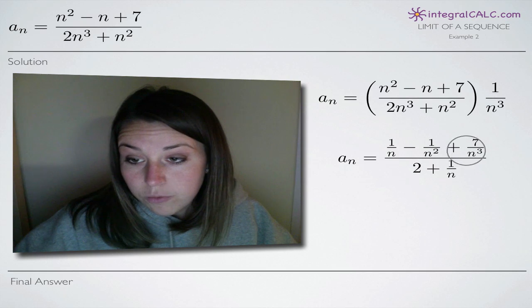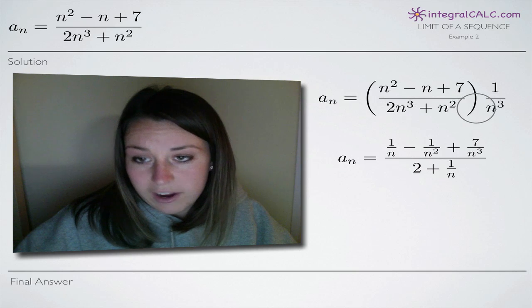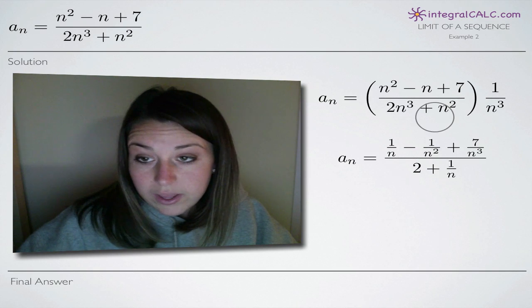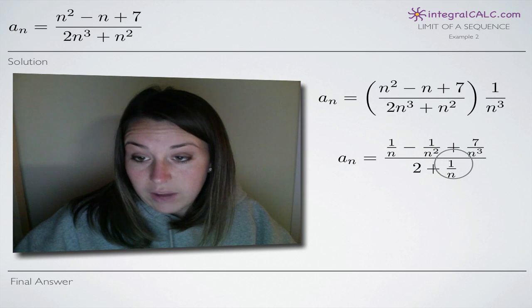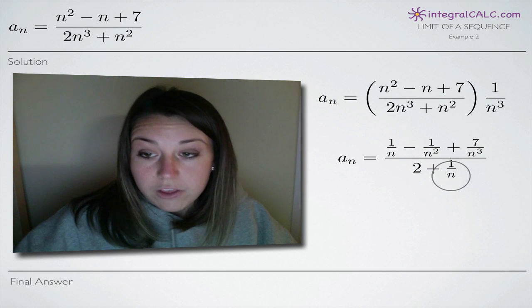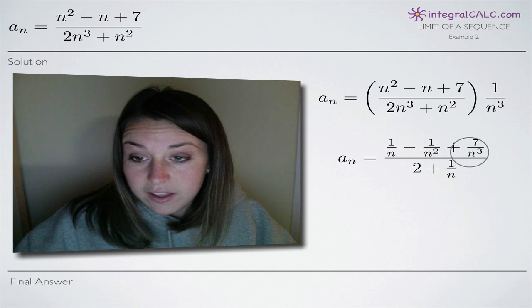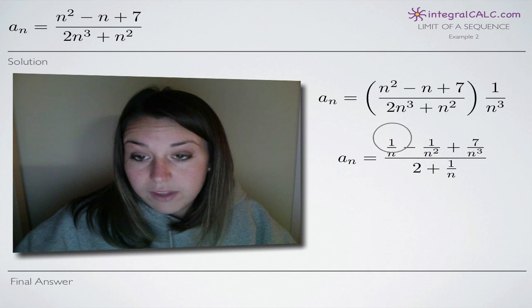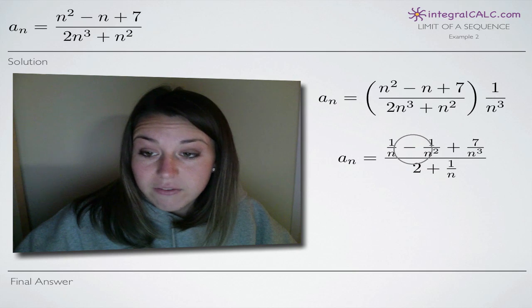7 over n cubed will stay just as it is. 2n cubed divided by n cubed just leaves 2. And then n squared divided by n cubed leaves us again with 1 over n. So now you notice that wherever the variable n exists, it's in the denominator of whatever term we're talking about instead of in the numerator.